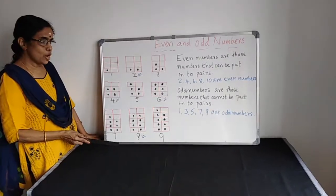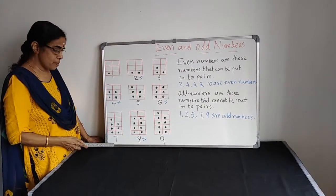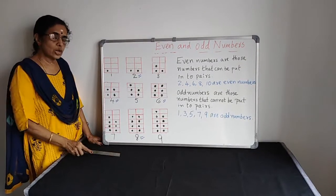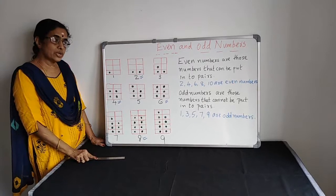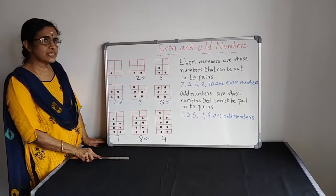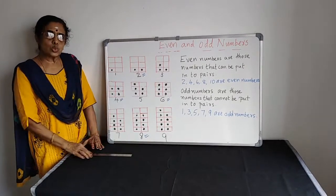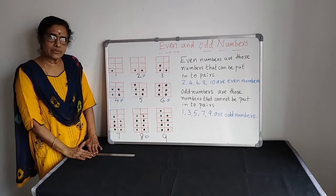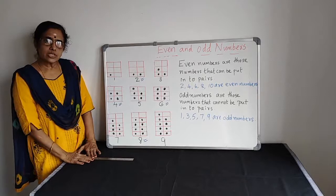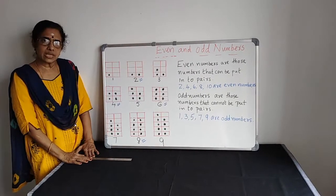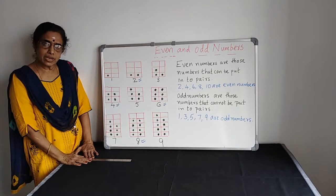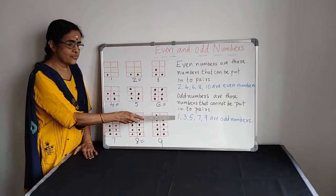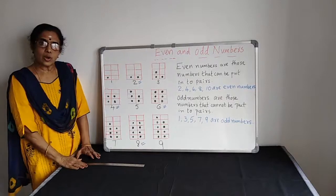You have to write numbers up to twenty and put the dots like this. You will get an idea and can make a general rule. If a number ends with two, four, six, eight, or zero, it is an even number. If a number ends with one, three, five, seven, or nine, it is an odd number.